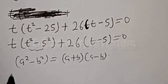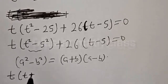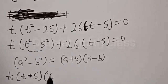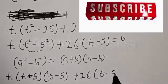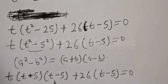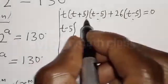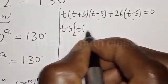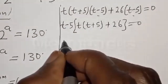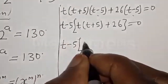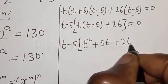Our equation becomes t times t plus 5 multiplied by t minus 5, plus 26 times t minus 5, equal to zero. Here we have a common factor of t minus 5. Factoring it out gives t minus 5 times the quantity t times t plus 5 plus 26, equal to zero. Expanding: t minus 5 times t squared plus 5t plus 26 equal to zero.